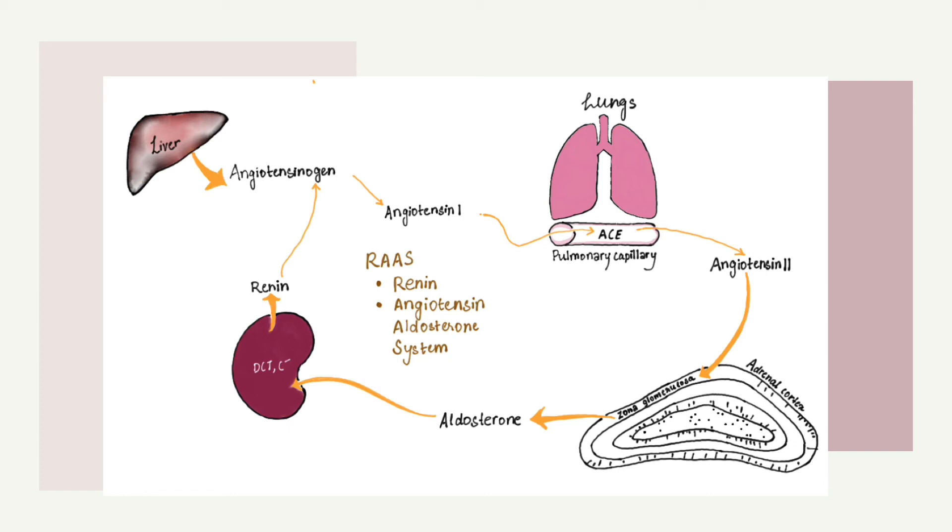Aldosterone acts on the distal convoluted tubule and the collecting duct to increase the sodium reabsorption, reverse hypovolemia and hence increase the blood volume and blood pressure, and increase potassium excretion.